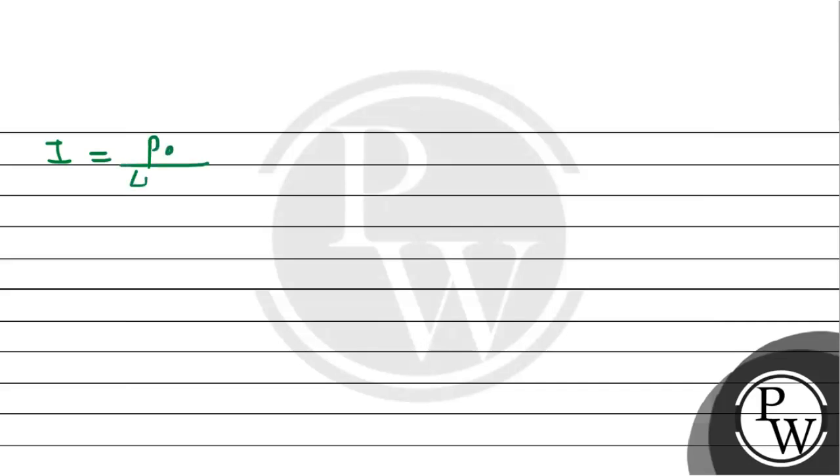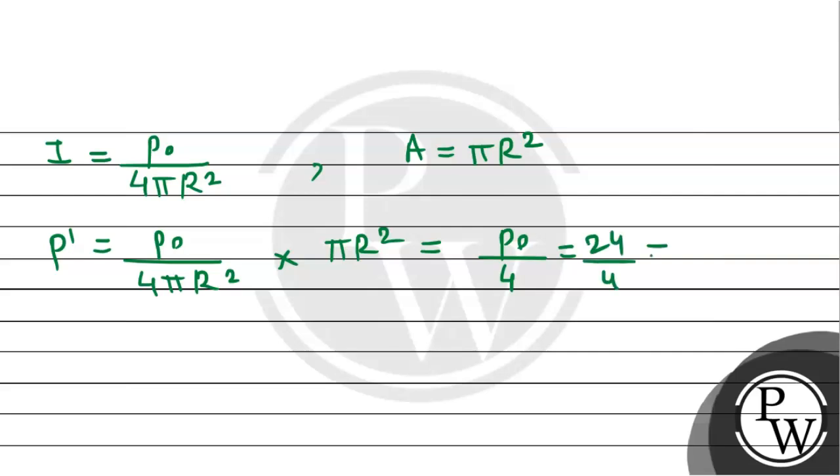If power is divided by the surface area 4πR², and area is πR², let's calculate P', the power received by the surface. This equals intensity P₀/(4πR²) multiplied by area πR². It comes out to P₀/4. P₀ is 24 divided by 4, which equals 6 watts.